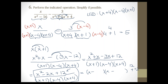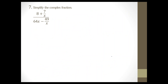Question number 7: simplify the complex fraction. If you have a complex fraction, the method I prefer is to eliminate the fractions in between — clear the fractions. You have to find the least common denominator of those individual fractions. In this case both fractions have the same denominator, so the LCD is just x. We're going to multiply each part — there are four parts — by the LCD.